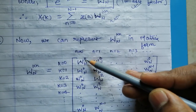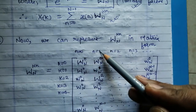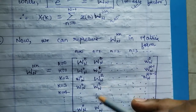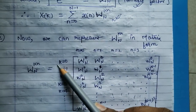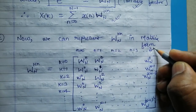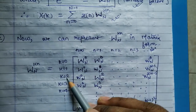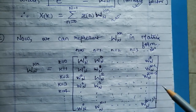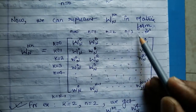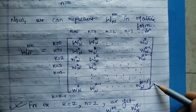For the next column, n equals 1: 0 times 1 is 0, 1 times 1 is 1, 2 times 1 is 2, 3 times 1 is 3, and so on up to (N minus 1) times 1 equals N minus 1. For the last column, n equals N minus 1: 0 times (N minus 1) is 0, 1 times (N minus 1) is N minus 1, 2 times (N minus 1) is 2(N minus 1), and the last entry is (N minus 1) squared.